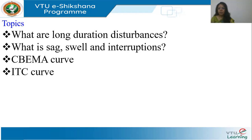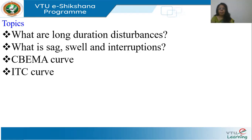In the previous session, we saw some aspects of the classification of different power quality disturbances, and we saw how transients are described — impulsive transients and oscillatory transients, and the reasons for the transients. We will now move on and see another two or three types of important voltage power quality disturbances in this session.